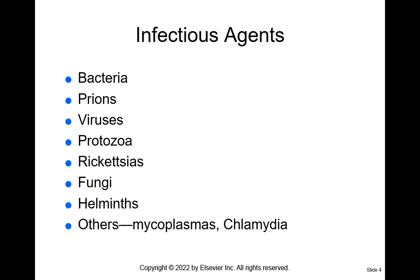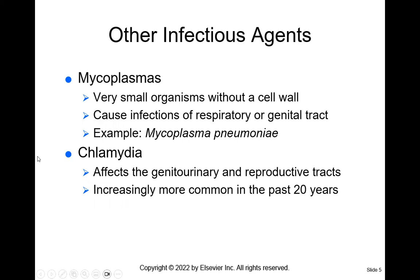The infectious agents — those pathogens — can be bacteria, prions, viruses, protozoas, rickettsias, fungi, helminths, mycoplasmas, and chlamydia. Note that there are different ways to fight each. Antibiotics are reserved for bacteria. Mycoplasmas are small organisms without a cell wall that can infect mucous membranes like the respiratory or genital tract — an example is mycoplasma pneumoniae. Chlamydia affects the genitourinary and reproductive tracts and is unfortunately becoming more common.